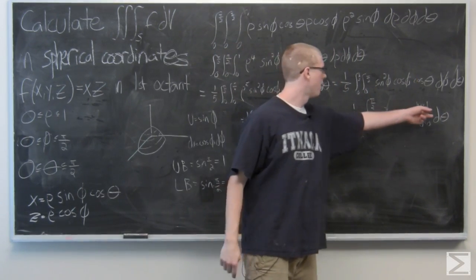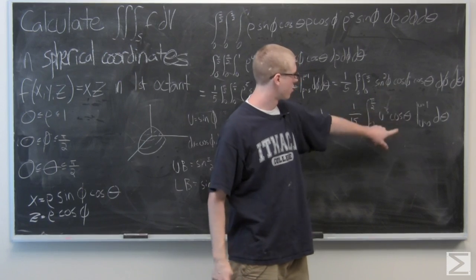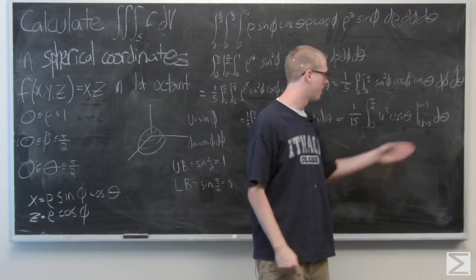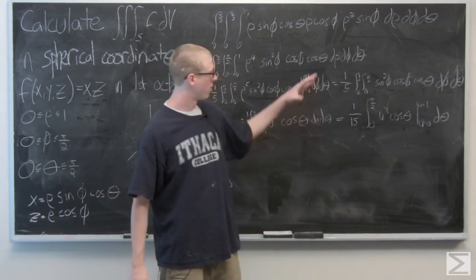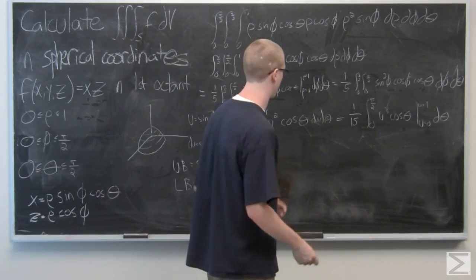Again, fairly simple substitution here. For U equals 1, U is just going to drop out and we're going to be left with cosine theta. For U equals 0, the whole term is going to drop out, so our only term left is cosine theta.